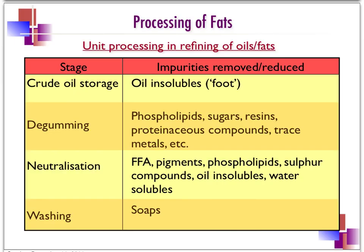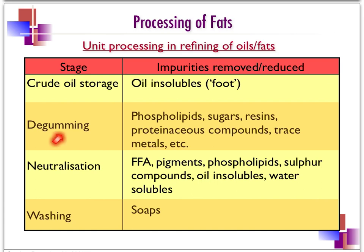Now let's look in more detail at the various unit operations in the refining of crude palm oil. The crude oil is usually stored in tanks, where it separates into two layers — the sediment or oil-insoluble part (sometimes called foots) can be separated out. The degumming process will remove the phospholipids (gums), which are the viscous component in the oil, as well as other components such as sugars, resins, proteinaceous compounds, and trace metals.